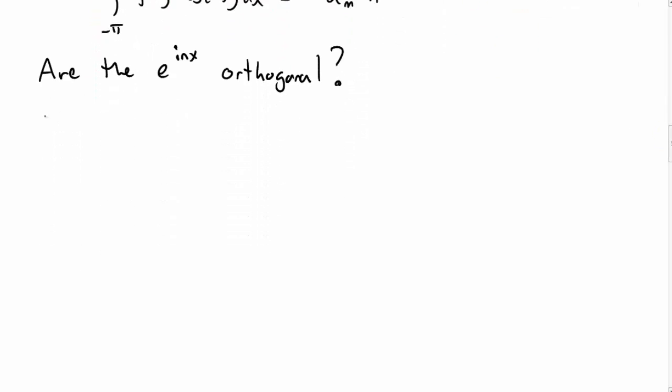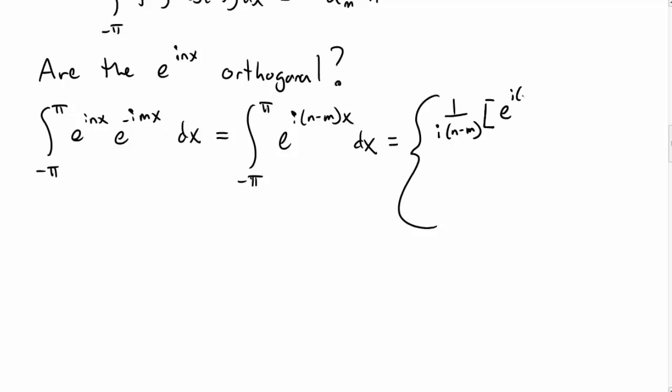Let's calculate an integral to see. So, the integral we need to calculate is integral from -π to π, e^(inx) e^(-imx) dx. I can combine my exponentials to make this a little bit simpler. And then I have to consider two cases. So the first case is when n is not equal to m.